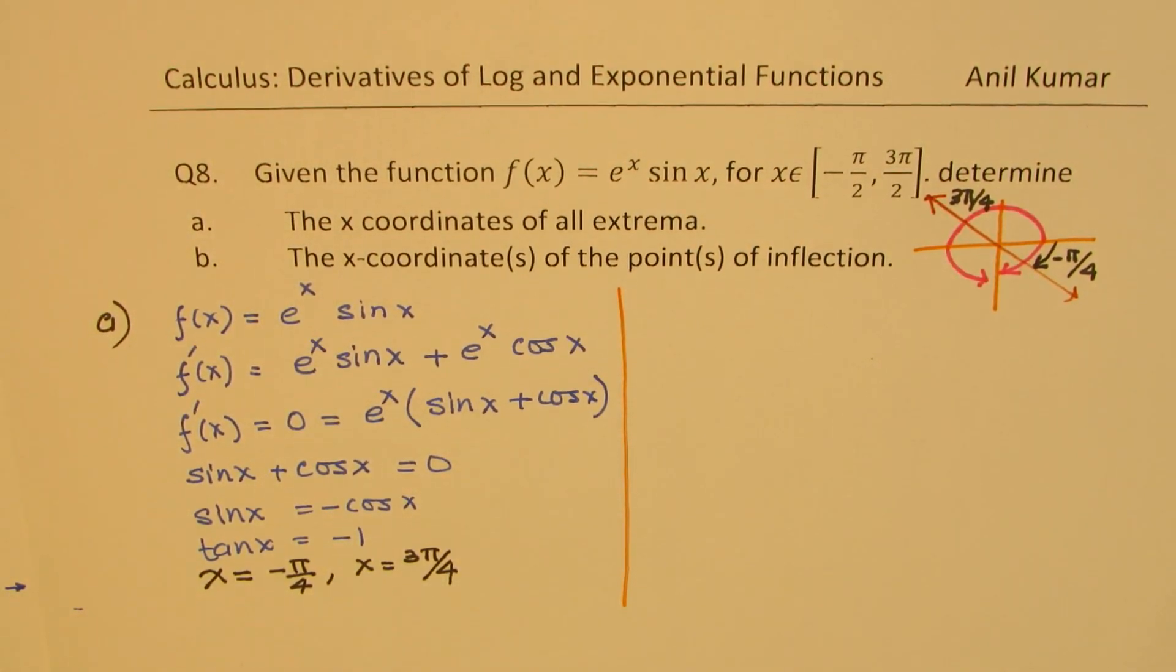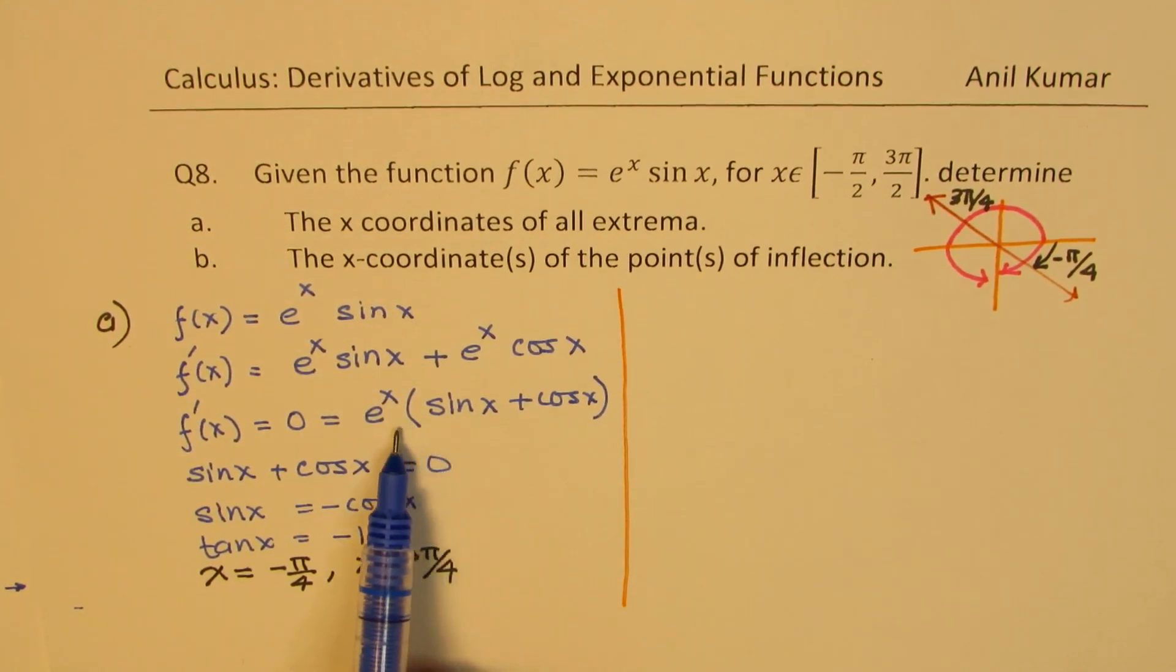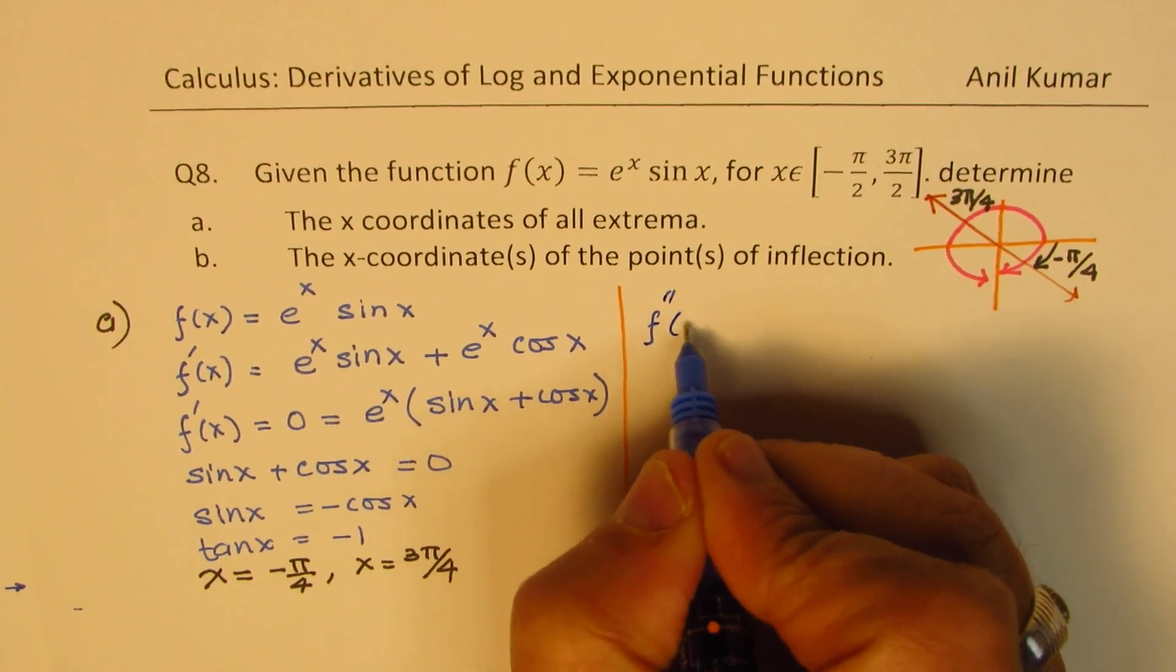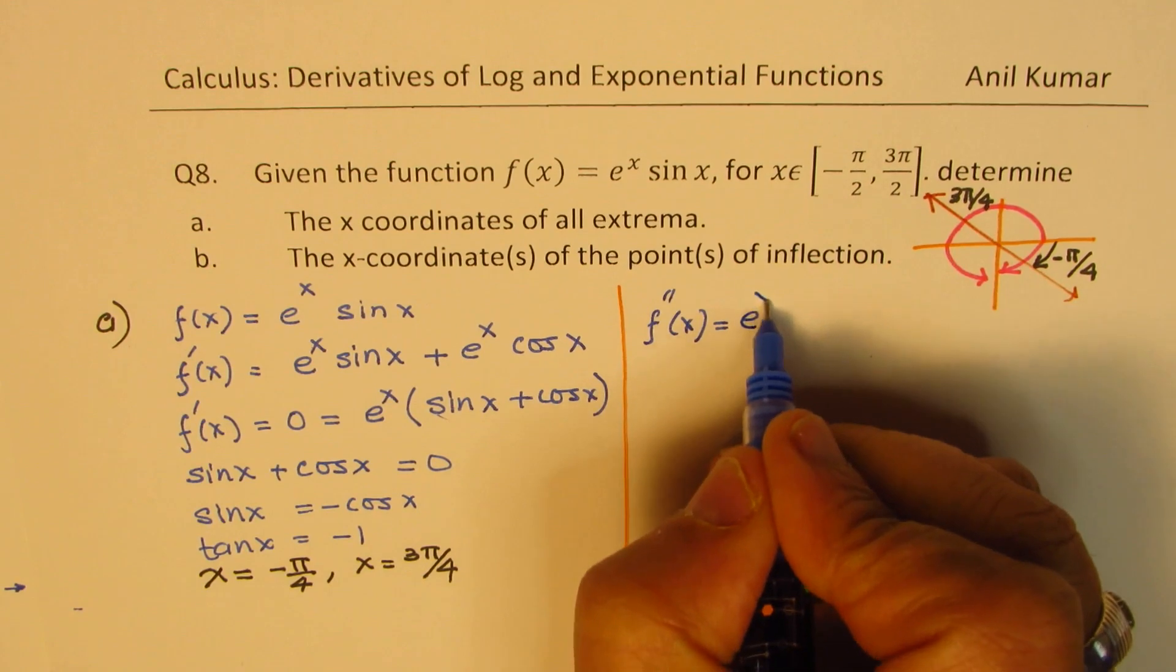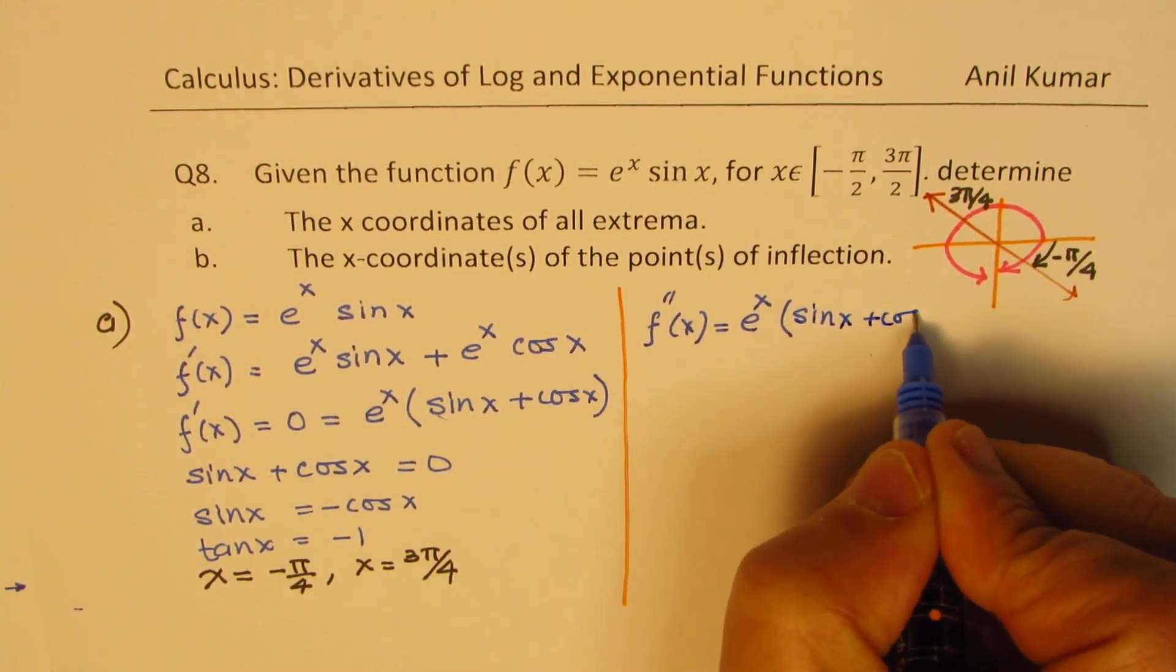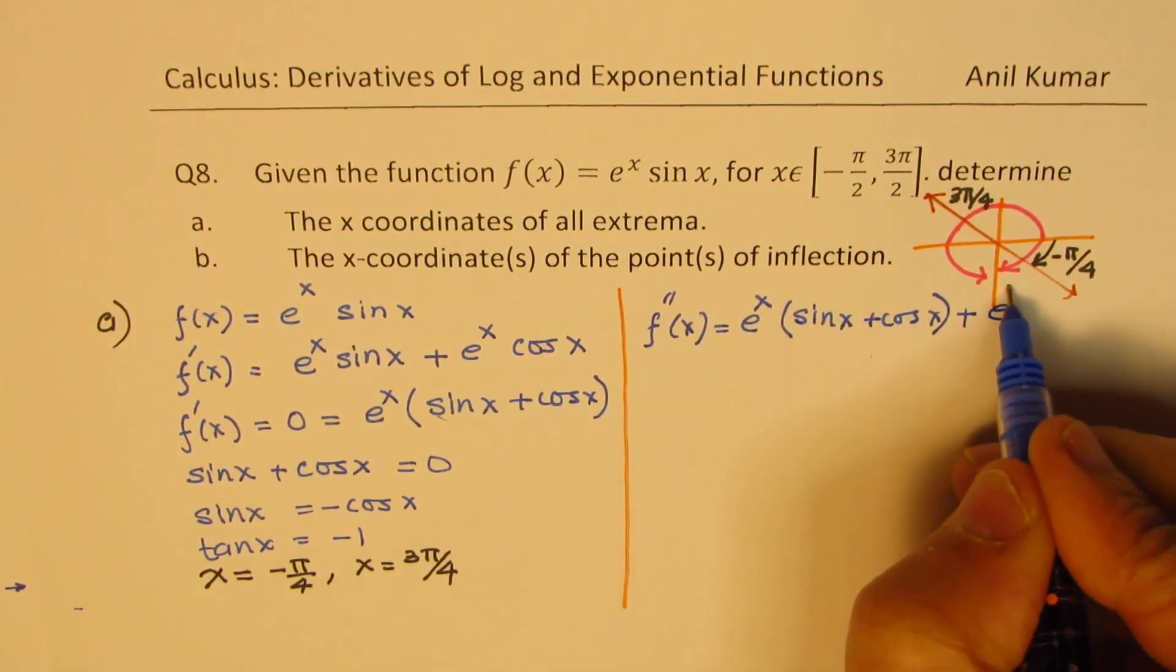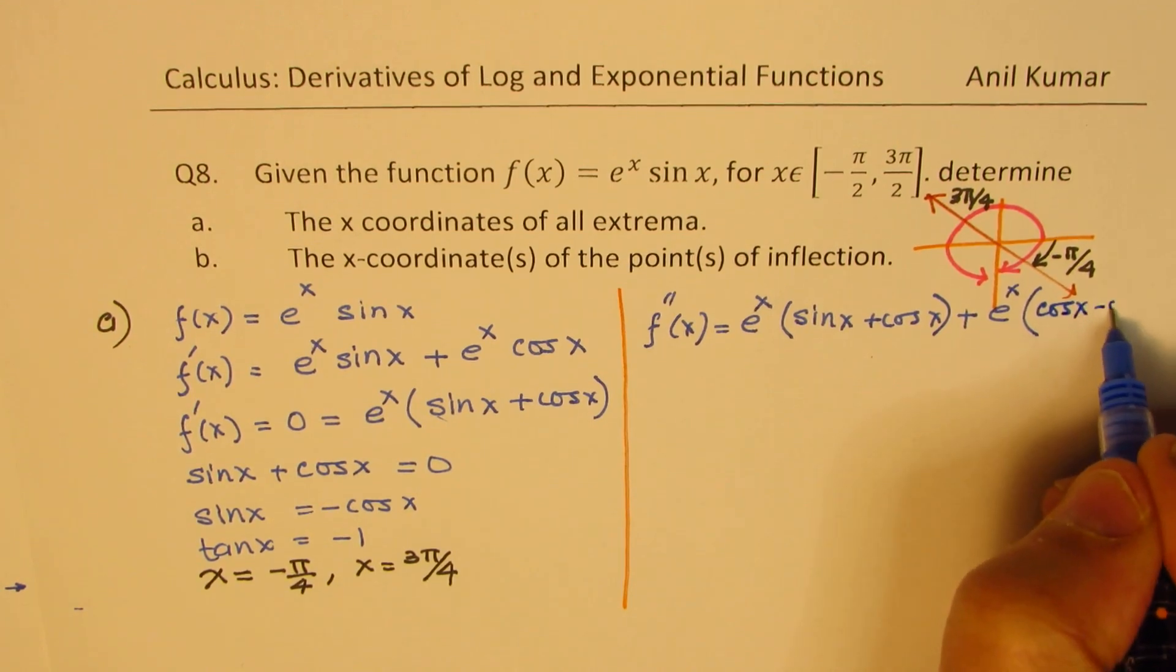Now let's look into part b. We need to find the second derivative now. So we'll begin from here. Find the second derivative. So in this case, f double dash x is equal to e to the power of x times this function, plus derivative of this, e to the power of x times this derivative, which is cos(x) minus sin(x).